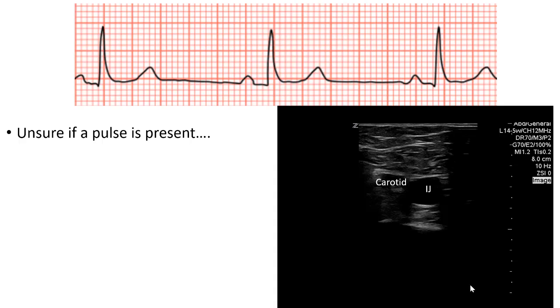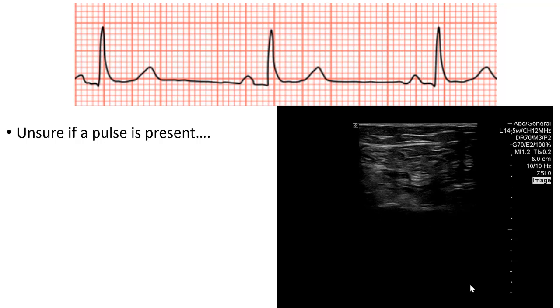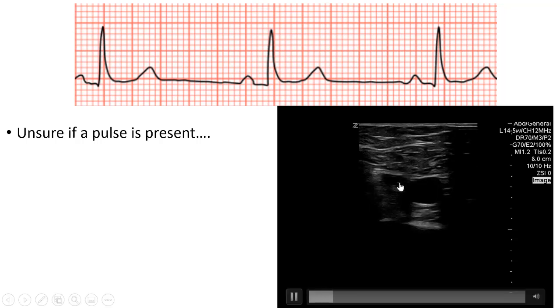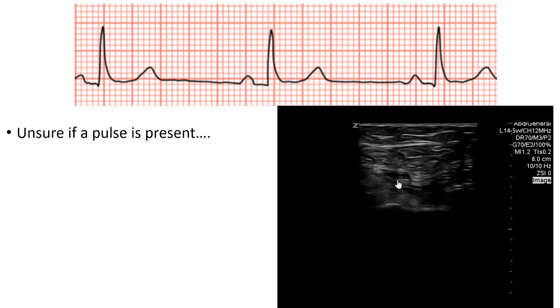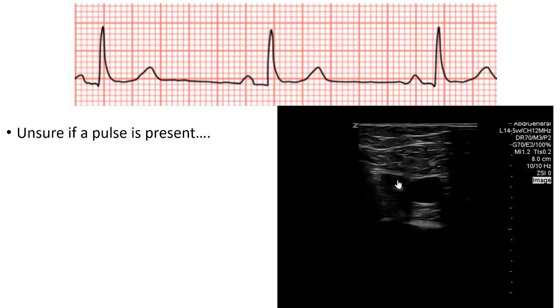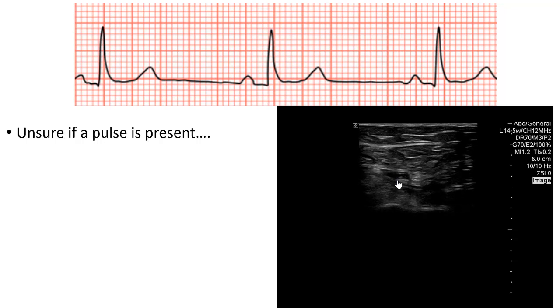Now let's look at another case. A patient is admitted to the medicine service but, due to lack of beds, has remained in the emergency department overnight. At nursing handover, the patient is found unresponsive, no pulse is palpable, and the nurse starts CPR and calls for the emergency doctor. The patient is placed on the monitor — an organized rhythm is seen but no pulse is palpable. A POCUS pulse check is performed and no carotid pulsations are seen; the carotid artery flattens like a pancake. This is true PEA. CPR is restarted, 1 mg of epinephrine is given every 3–5 minutes, reversible causes are considered including POCUS of the heart and lung, but no reversible cause is found and the patient ultimately dies.